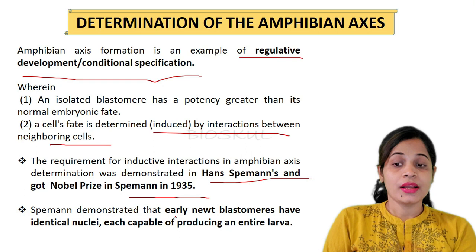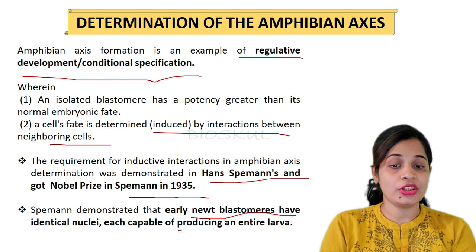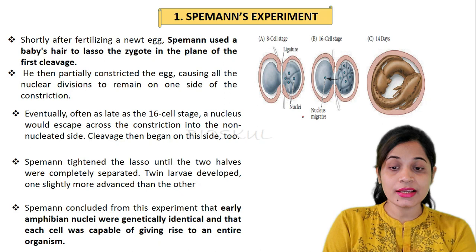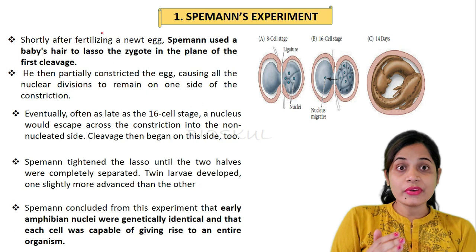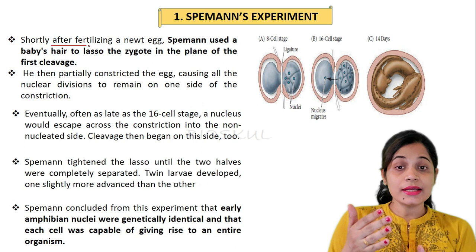The requirement for inductive interaction in amphibian axis determination was demonstrated by Hans Spemann, for which he received the Nobel Prize in 1935. We will now see the experiments that led to the determination of the amphibian axis.